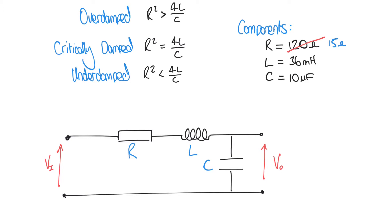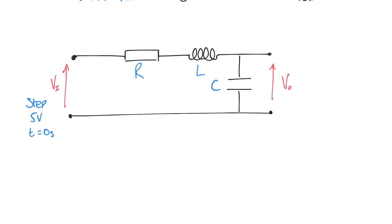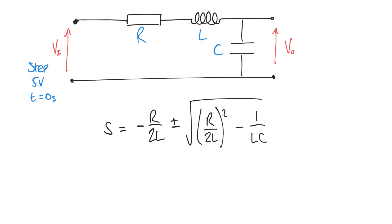We have a series RLC circuit where the output is the voltage measured across the capacitor. We're going to apply a step input at time 0 seconds of height 5 volts — a constant voltage applied at time zero. In our previous video, we discussed the root-finding equation: S equals minus R over 2L, plus or minus the square root of (R over 2L) squared minus 1 over LC.